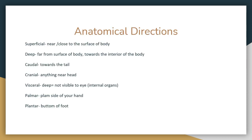Here are some more terms. Superficial means near or close to the surface of the body — think about your skin. Deep is far from the surface, toward the interior — think of your internal organs. Caudal means towards the tail. Cranial means talking about the head. Visceral is deep, not visible to the eye, like internal organs. Palmar means the palm side of your hand. Plantar means the bottom of your foot.